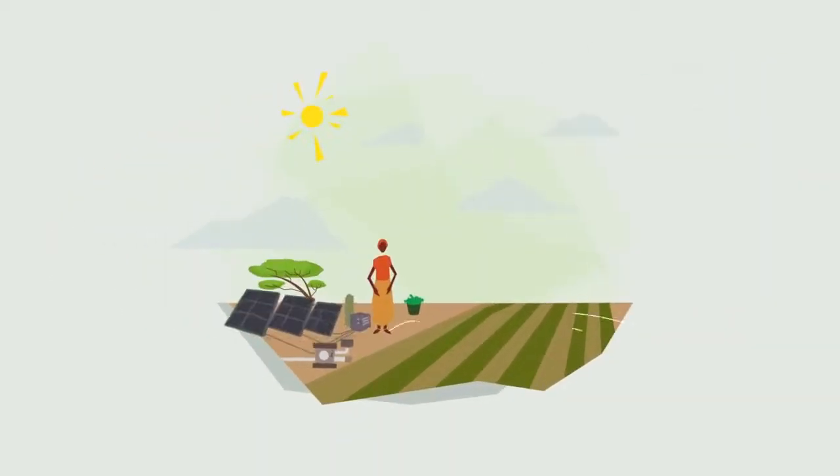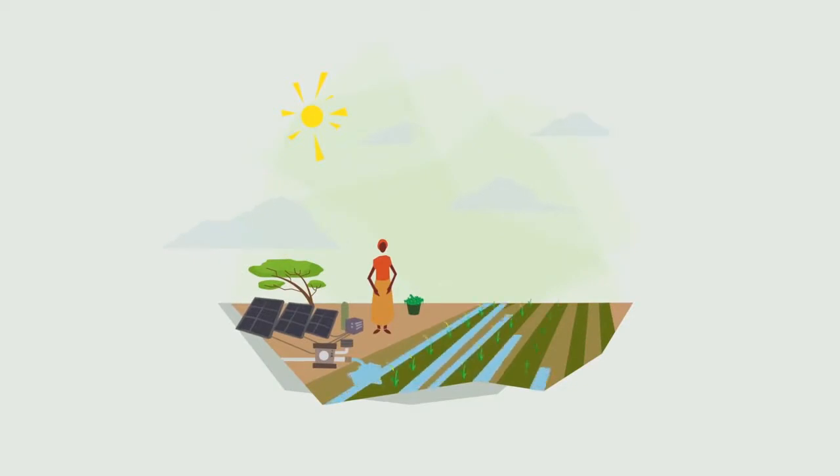With energy, a farmer can use irrigation to grow more food, can decrease the amount of food that spoils after the harvest through refrigeration, and can earn more income through processing such as making milk into cheese or drying food.